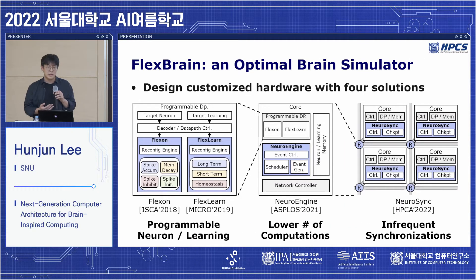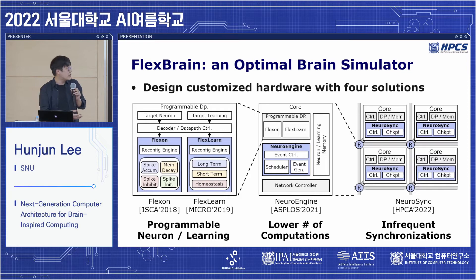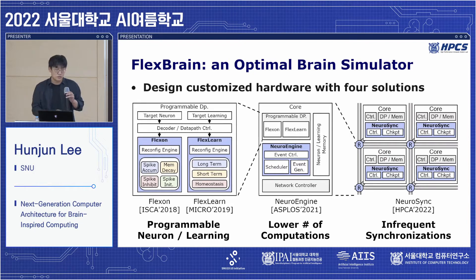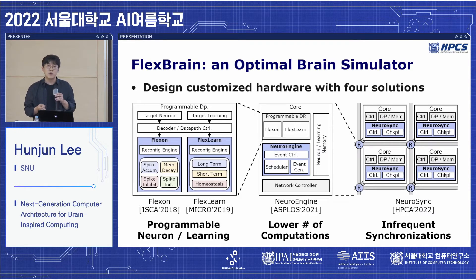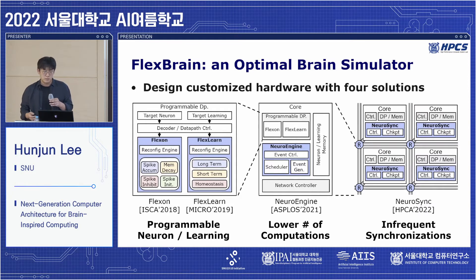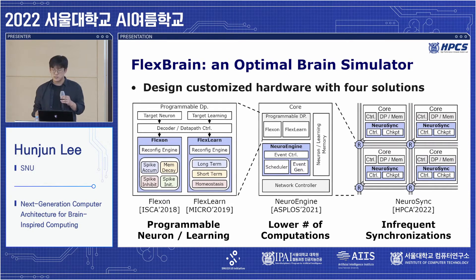This is our design: FlexBrain, an optimal brain simulator based on the four identified challenges — what we have been building for the last four years. We start with a programmable data path, FlexZone and FlexLearn, reconfigurable depending on the target neural model and learning rule, presented at ISCA and MICRO. Then we optimize a single-core design with NeuroEngine, a spike-driven architecture that computes only when a neuron receives or fires a spike, presented at ASPLOS. Lastly, we propose NeuroSync, a scalable architecture for multi-core systems that synchronizes less frequently without sacrificing accuracy, presented at this year's HPCA.